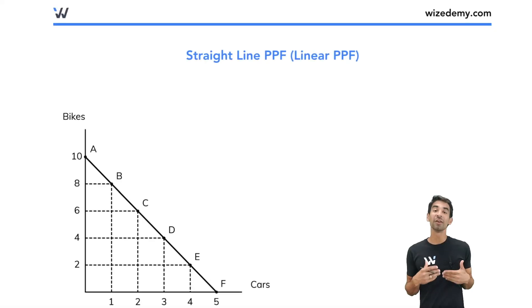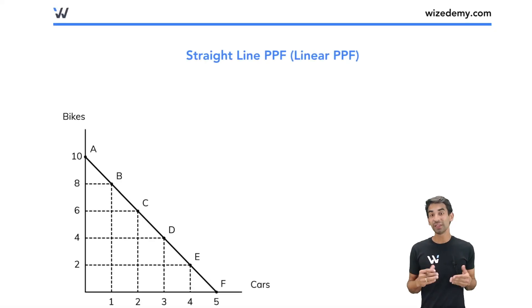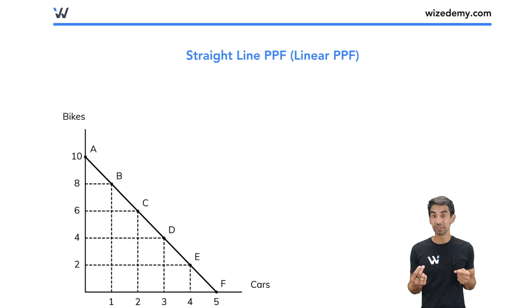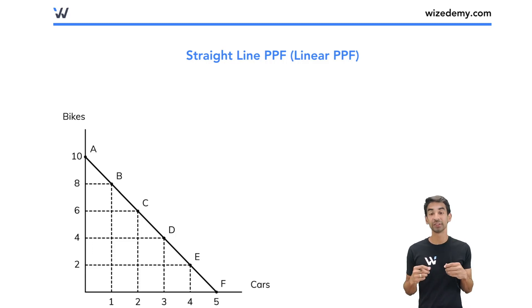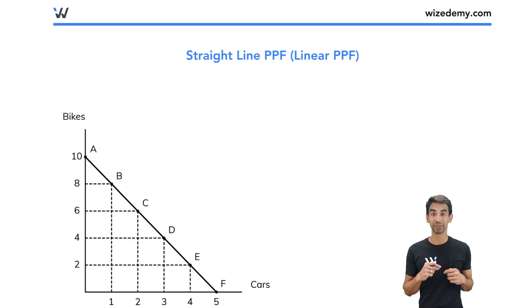Normally the PPF is a concave shape, but if they tell you that there is a linear PPF, that just means it's a straight line like the one in this diagram — downward sloping.